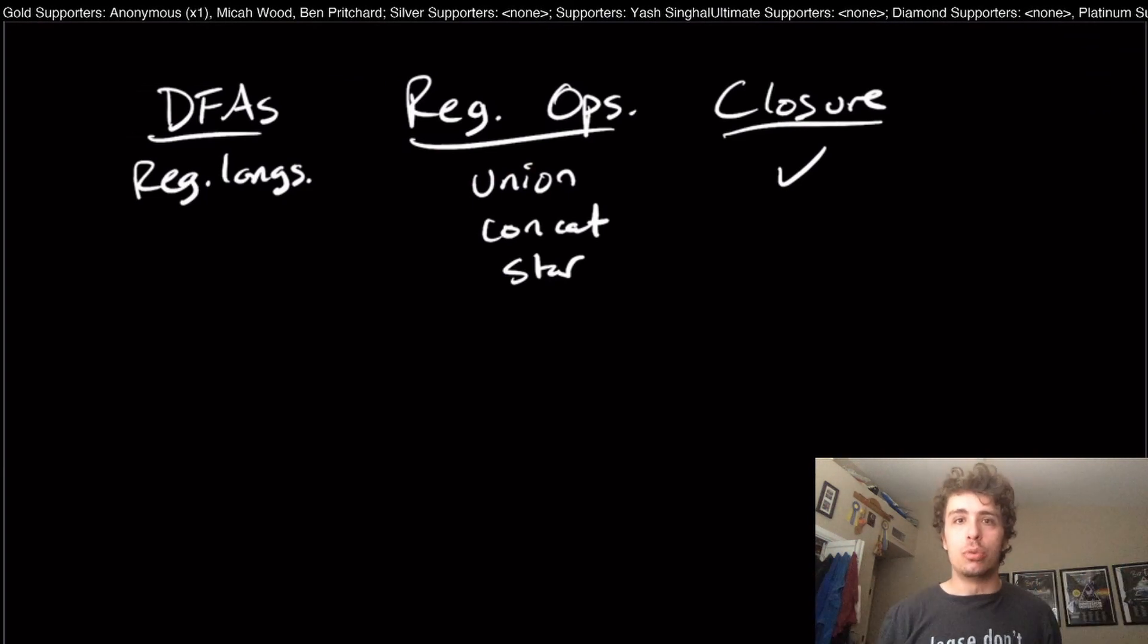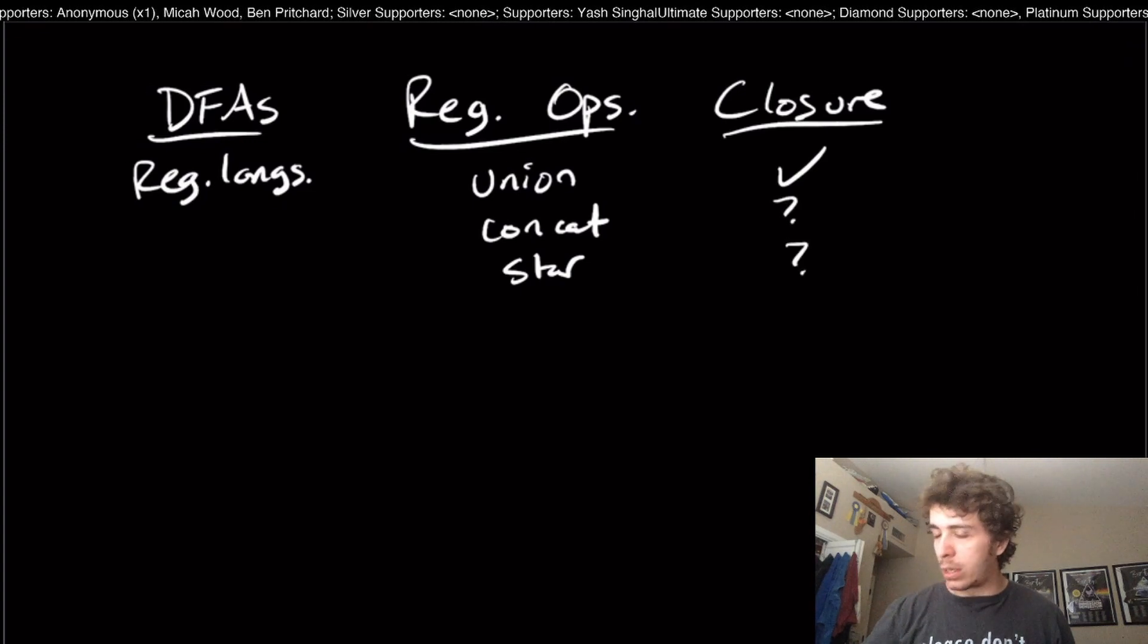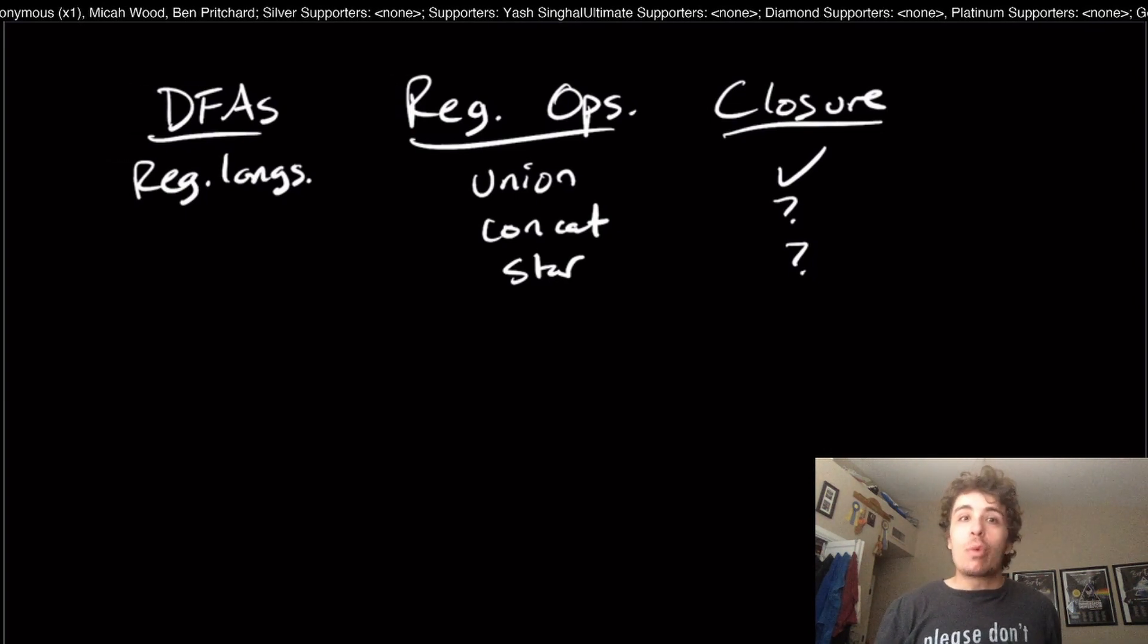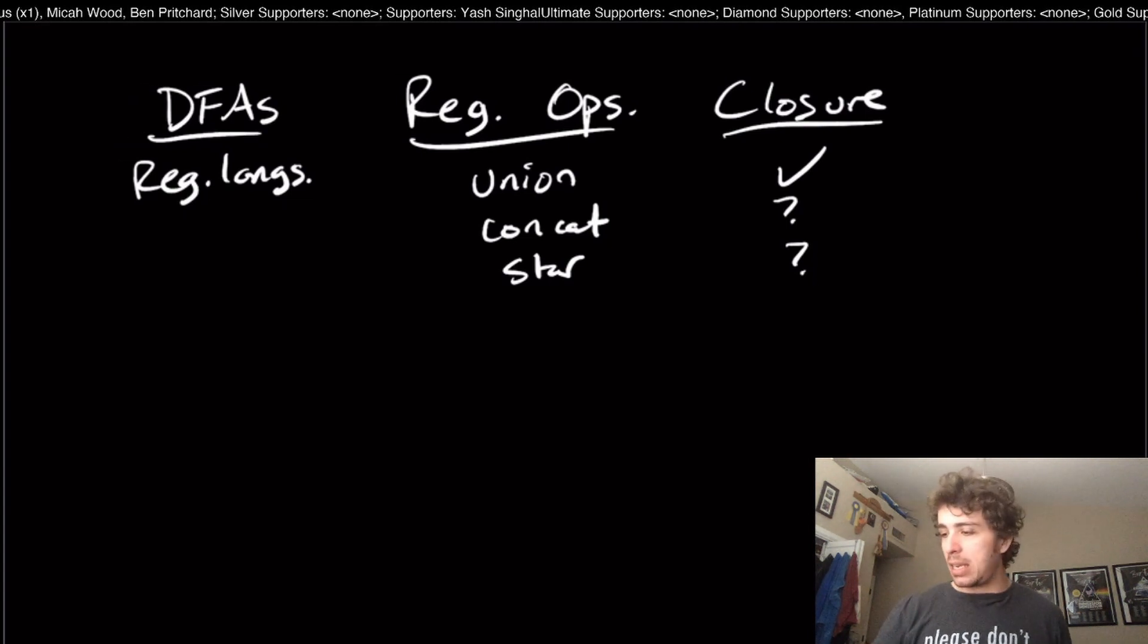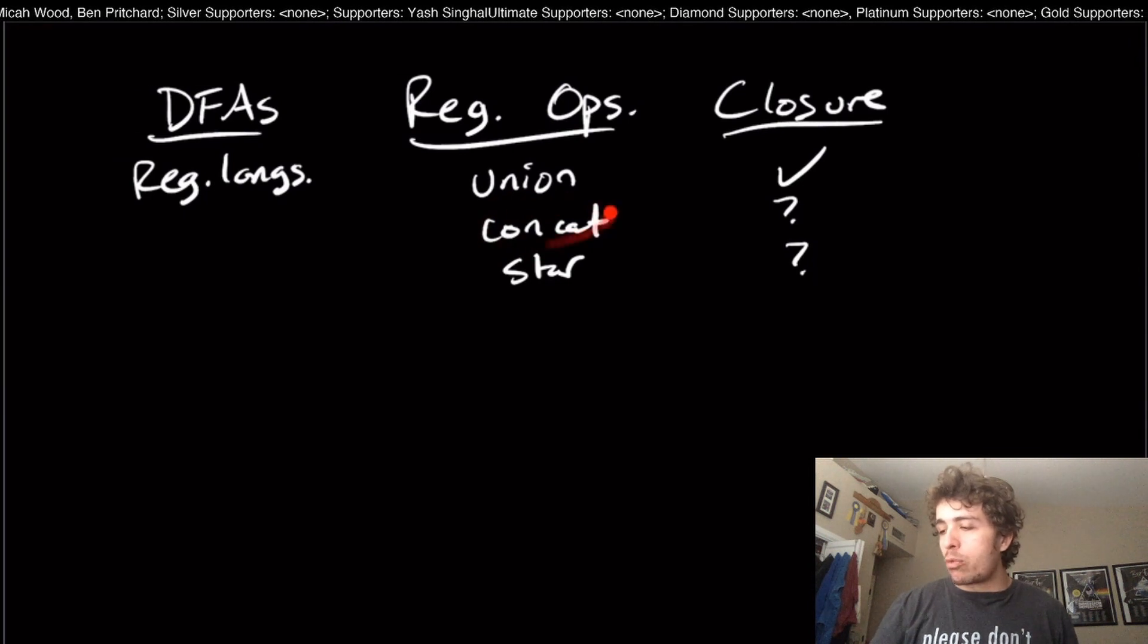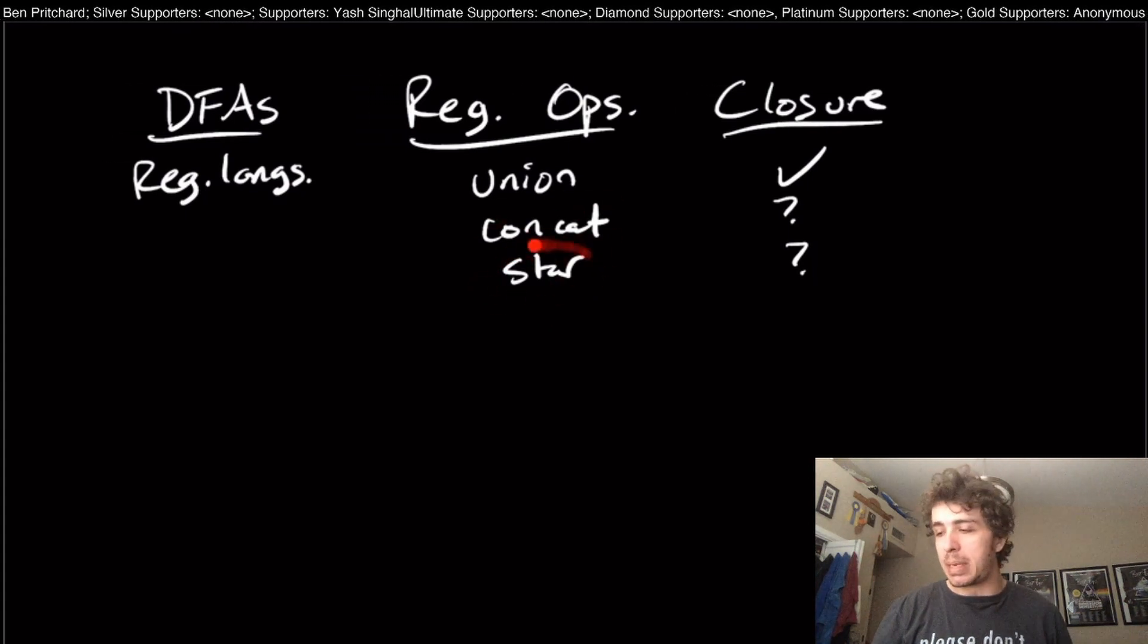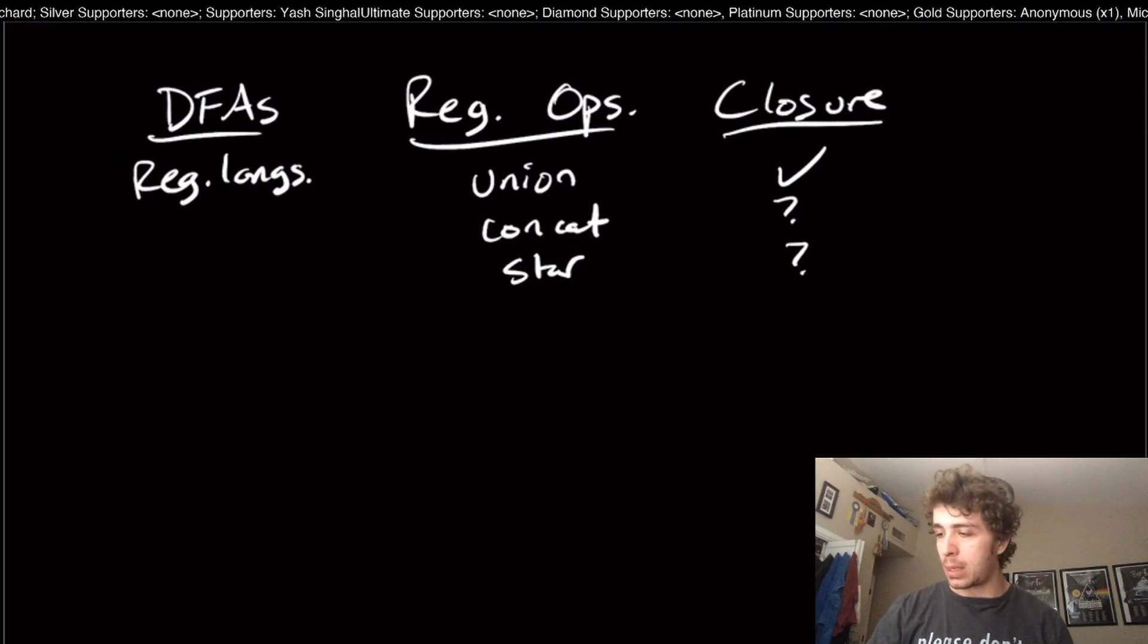The idea there was that we simulated two DFAs at exactly the same time, but we haven't shown that for concatenation and star. What we want to at least motivate is: can we actually do concatenation or star for DFAs? I claim that it's actually quite difficult, and we only really need to focus on concatenation because star is harder than concatenation in some sense.